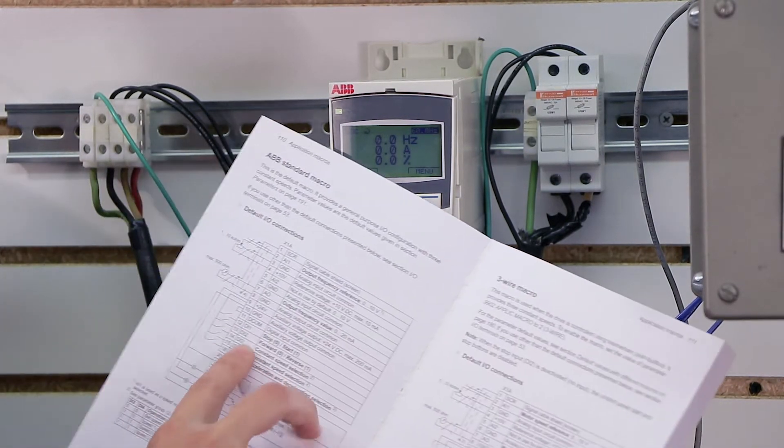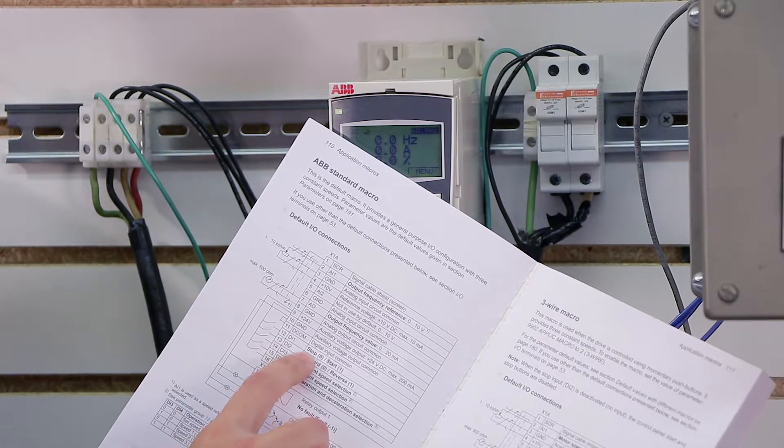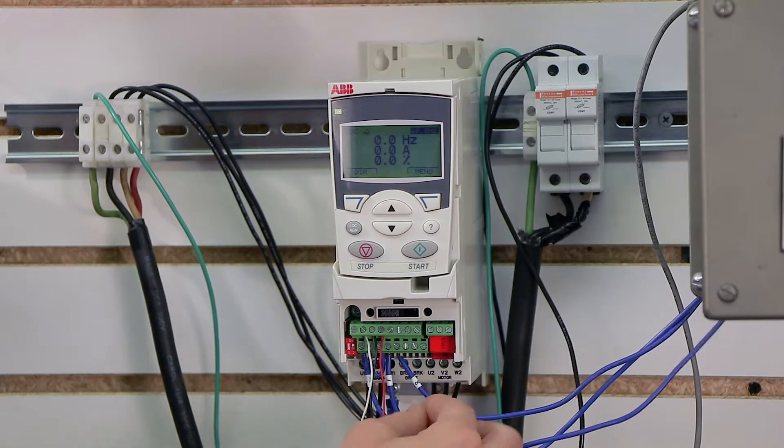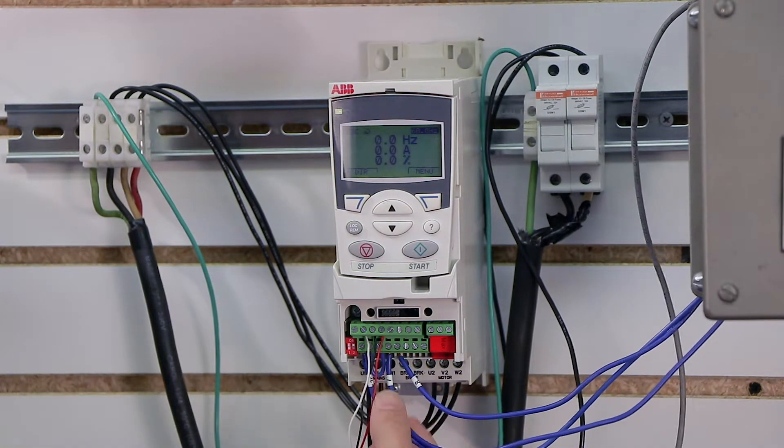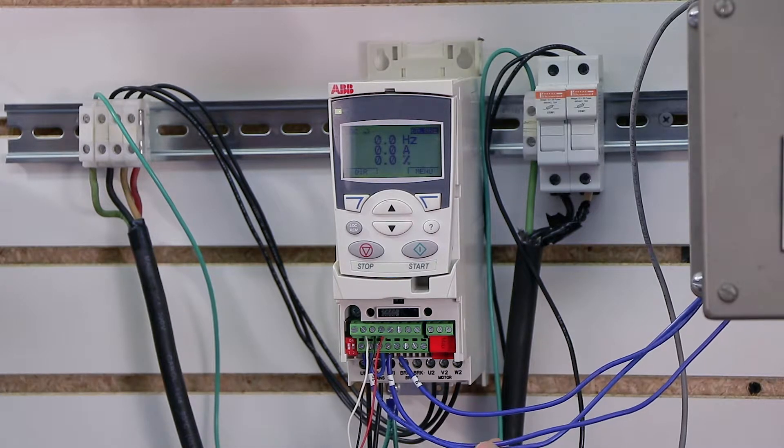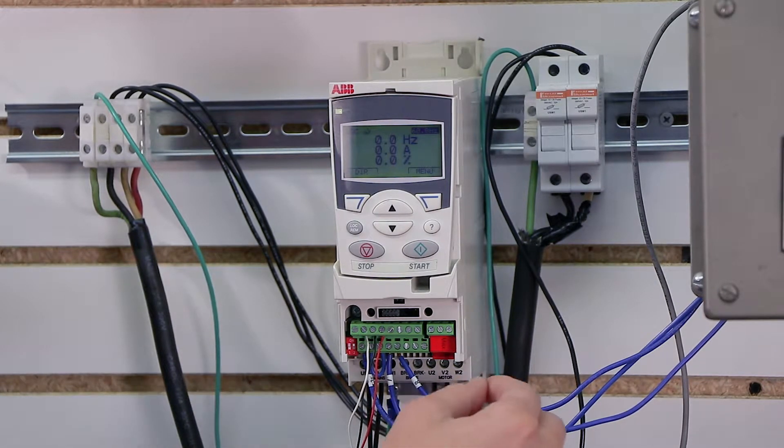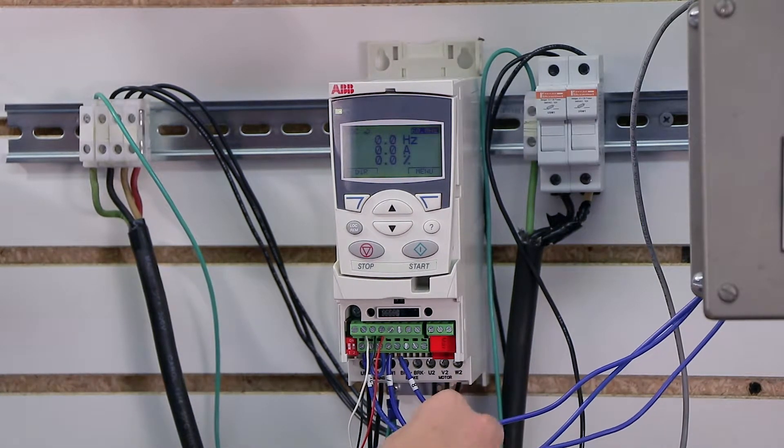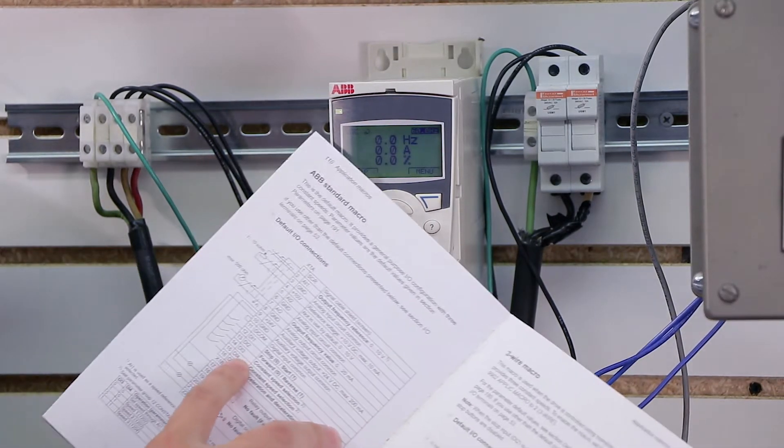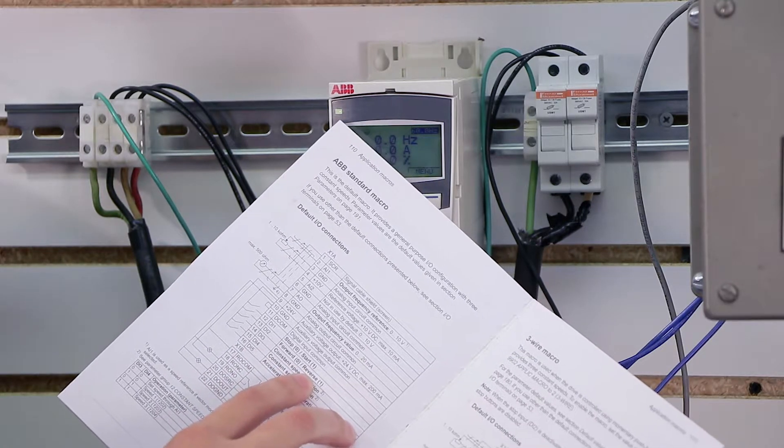On the other side of our start switch, it's going to flow back into terminal 12. On the print, you'll see that terminal 12 is our digital input that is set up for start stop control. For the forward reverse switch, we're flowing from terminal nine into our switch for forward reverse, and then it's flowing from the other side of the switch into terminal 13, where if you look at the print is actually the forward and reverse command.